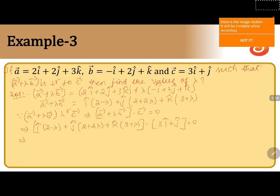Now we multiply the i, j, k coefficients. The i coefficient gives (2 minus lambda) times 3, the j coefficient gives (2 plus 2 lambda) times 1, and there is no k coefficient in the second term so it becomes 0. Multiplying: 3 times 2 is 6 minus 3 lambda, plus 2 plus 2 lambda equals 0. That gives 8 minus lambda equals 0, so lambda equals 8.